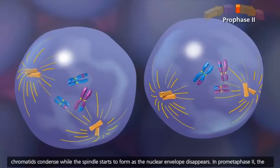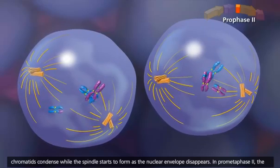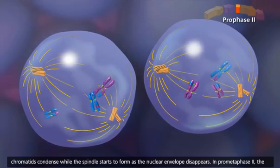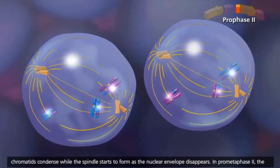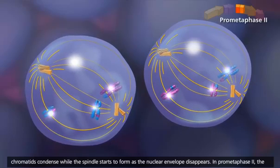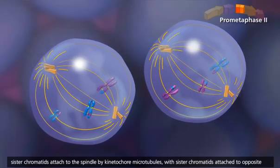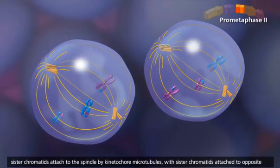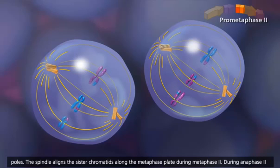Centrioles again duplicate and begin moving to opposite poles of each cell. In prophase II, the sister chromatids condense while the spindle starts to form as the nuclear envelope disappears. In prometaphase II, the sister chromatids attach to the spindle by kinetochore microtubules, with sister chromatids attached to opposite poles.